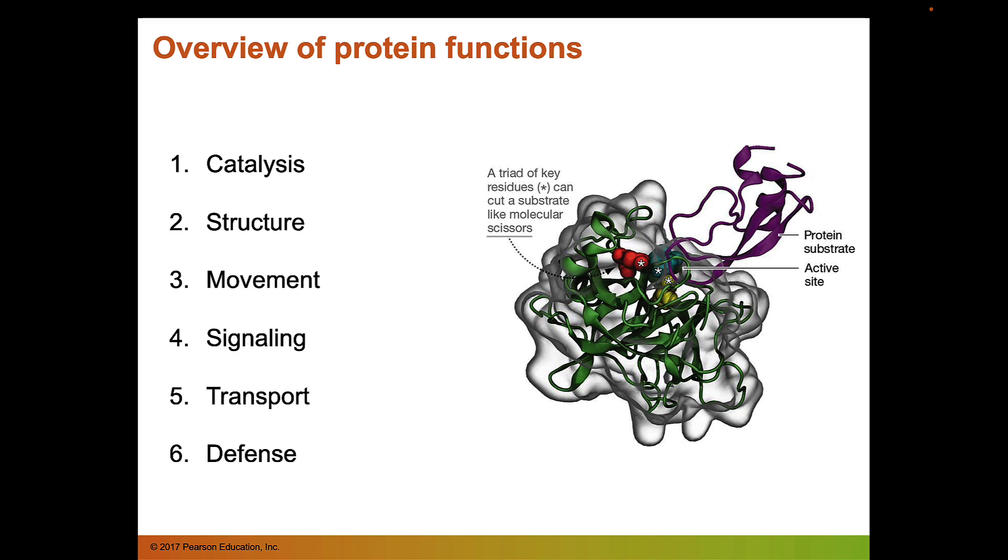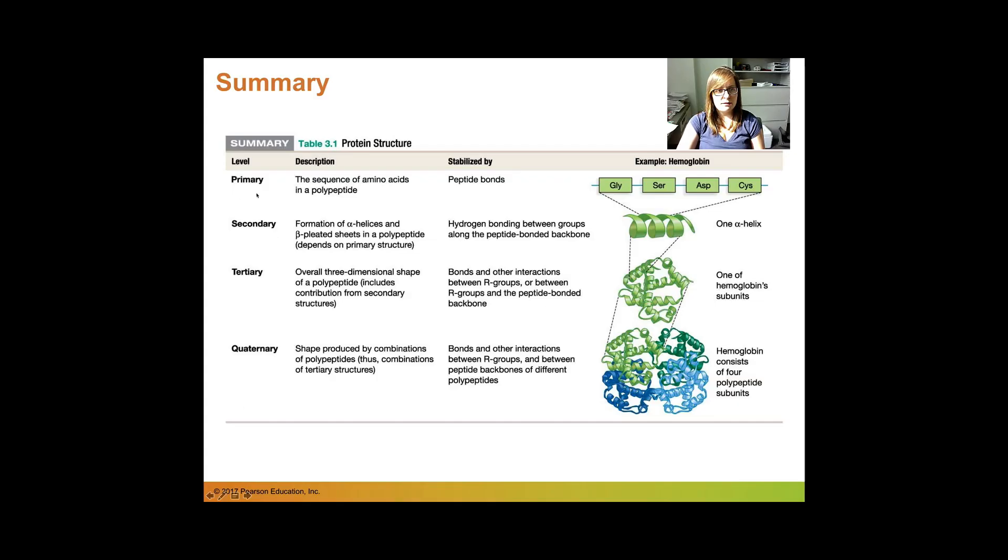So just to summarize, we have our primary, which is the sequence of amino acids in a polypeptide stabilized by peptide bonds. We have secondary formation of hydrogen bonds in the backbone. So here's an alpha helix, but we also can get beta pleated sheets. Tertiary is the overall three-dimensional shape. It's formed by interactions between R groups. And then finally, the quaternary structure, which is formed when multiple polypeptides interact.